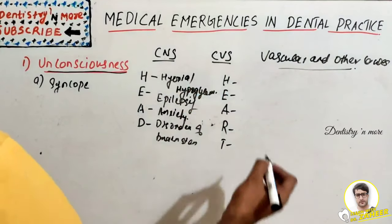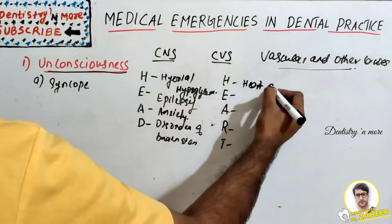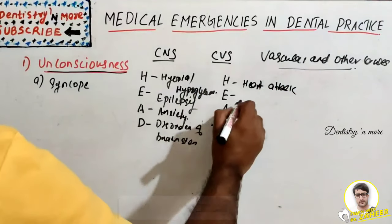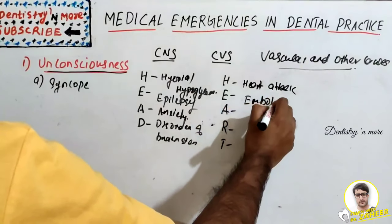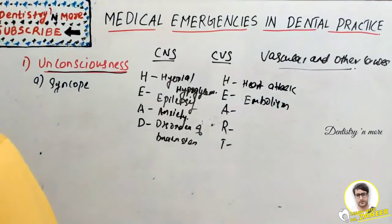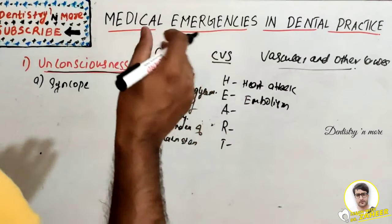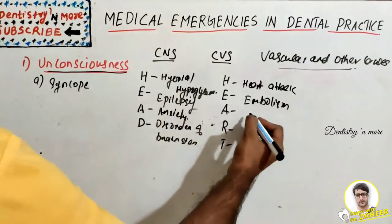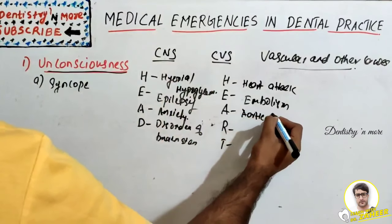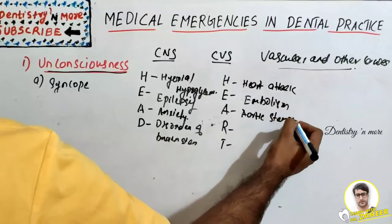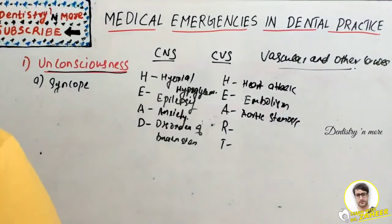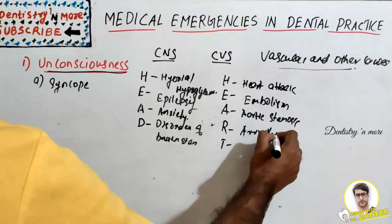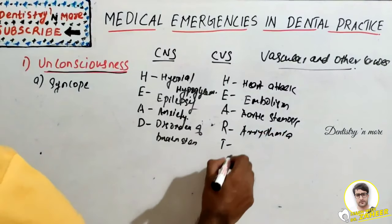Under CVS causes: H for heart attack, E for embolism, A for aortic stenosis, R for arrhythmia, and T for tachycardia. All these conditions can result in syncope, so we need to rule out each condition and arrive at a proper conclusion.